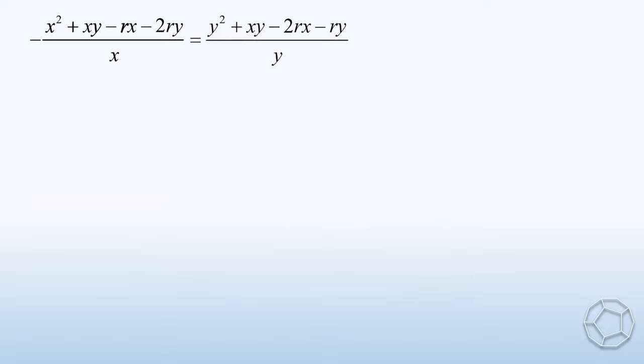On the left, dividing all the terms by X, we have -X - Y + R + 2RY/X. Similarly, the right-hand side is equal to Y + X - 2RX/Y - R. We put the terms with R to the left and the X and Y terms to the right.